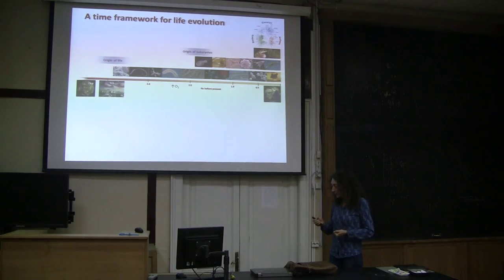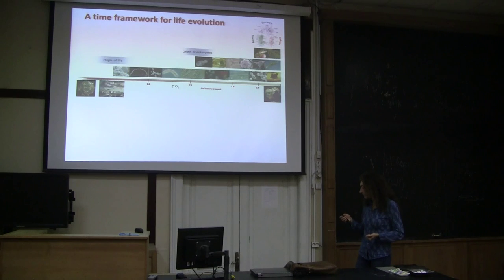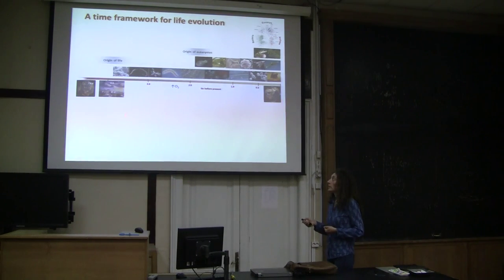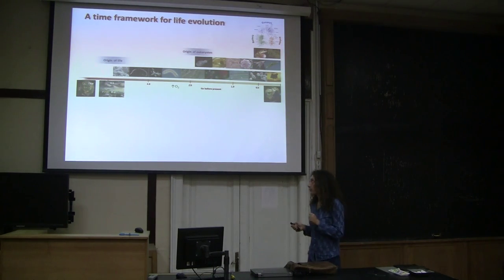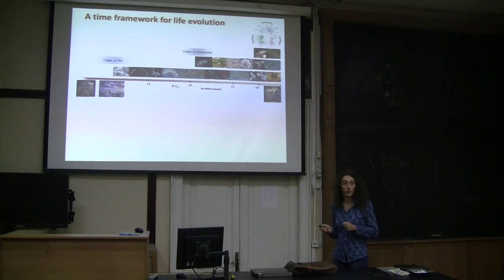Before doing anything else I would like to set up a time framework for the origin and evolution of life based on some geological constraints. We know that the Earth accreted by 4.6 billion years ago, so we have a planet that had just formed and started to cool down. By 4.4 billion years ago we already had an ocean and continents. From this moment all the conditions might have been there for life to evolve and emerge.